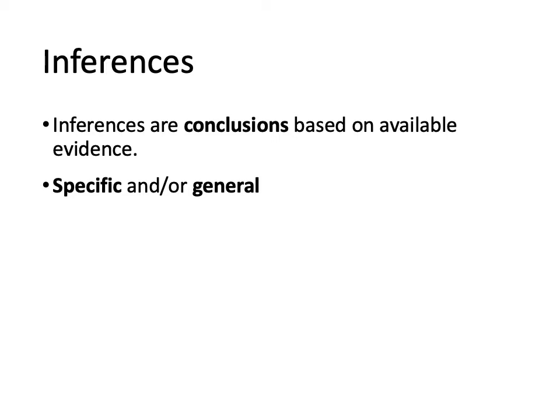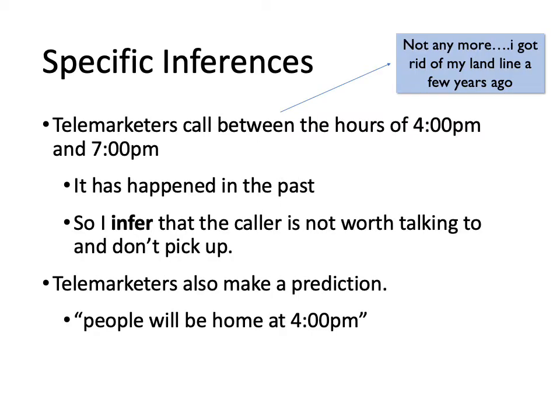Let's look at some specific inferences. I talk about this example in the textbook. This used to happen — I got rid of a landline telephone in my house about five years ago, so I don't get quite as many calls as I used to. But especially when I had a landline, and this phone number had been in service since maybe 2003, telemarketers would often call between the hours of 4 and 7 — they would call the home phone between 4 and 7.